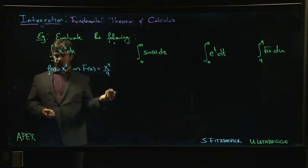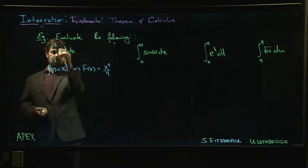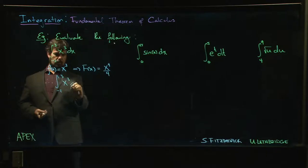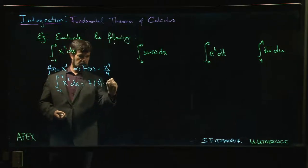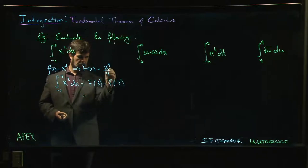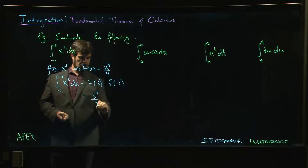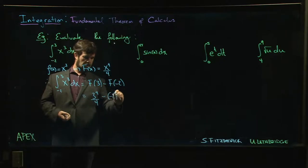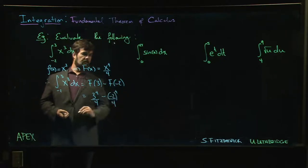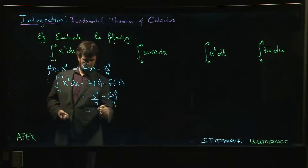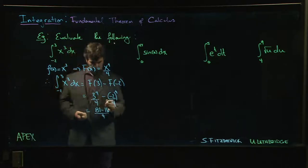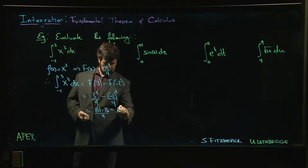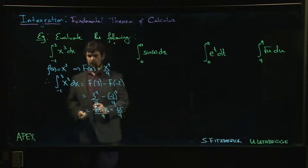The second part of the Fundamental Theorem of Calculus says this integral equals F(3) - F(-2). So we have 3⁴/4 - (-2)⁴/4, which gives us (81 - 16)/4 = 65/4, and we're done.